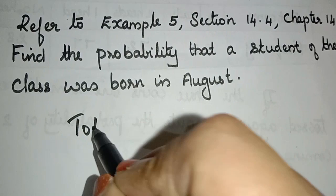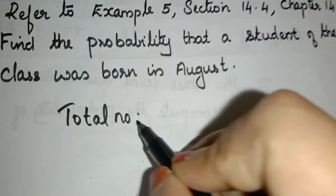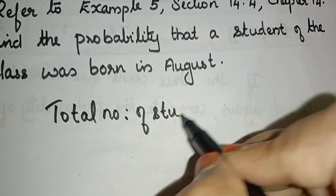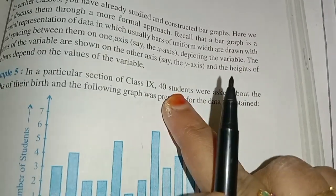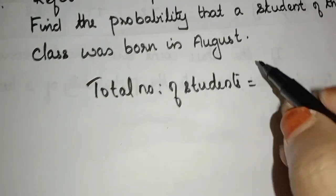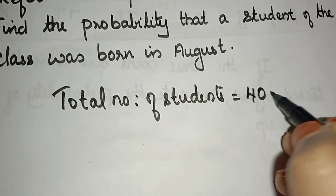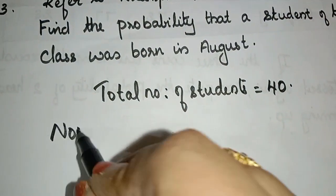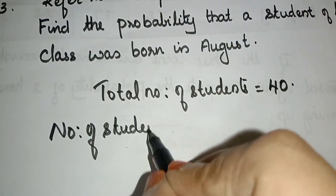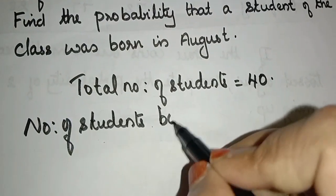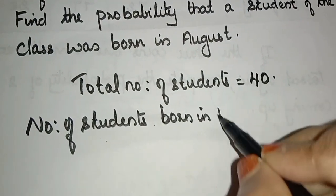Total number of students is equal to 40 students. We have to do a survey. Total number of students is 40. Number of students born in August — what is the number of students born in August?